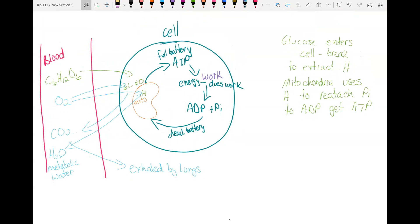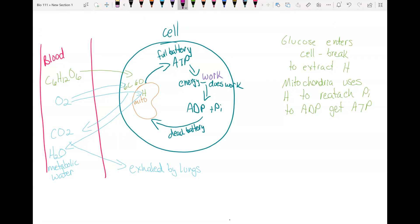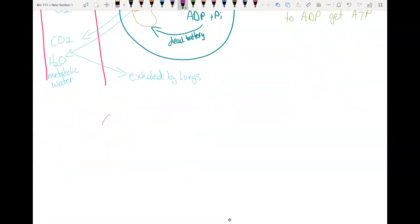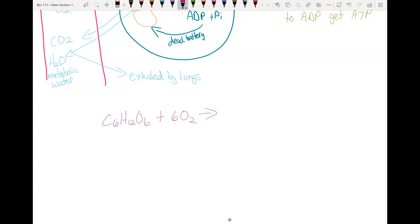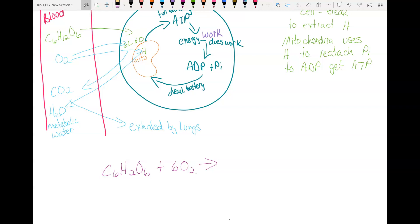So we can summarize this. We put all this together. You can say C6H12O6, that's your glucose. You get this by eating carbohydrates. Plus 6O2, that's oxygen that you breathe in through your lungs. Those things go to your cell.